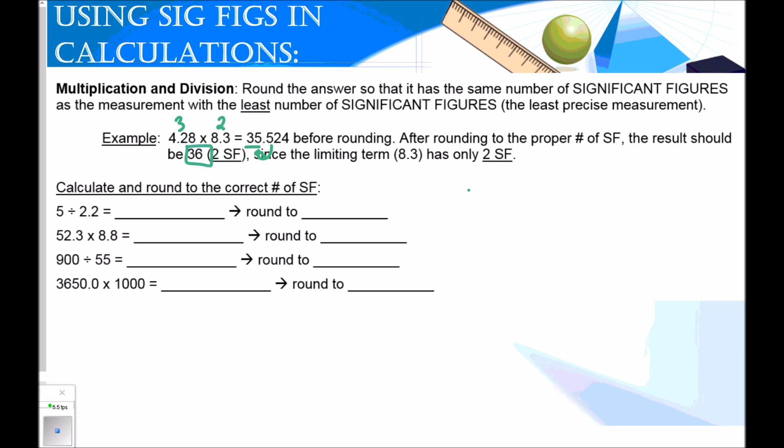Let's look at a couple more examples. I have 5 divided by 2.2. When I do this in my calculator, I get 2.27 repeating. 5 has one significant figure, 2.2 has two significant figures. So I need to round my answer to one significant figure. Final answer is 2. I'm going to do one more example with you and then I'm going to have you try the rest on your own.